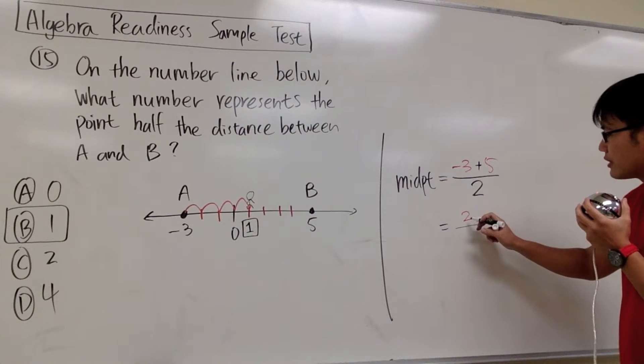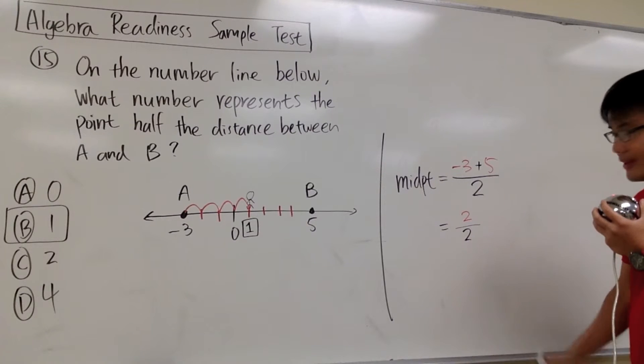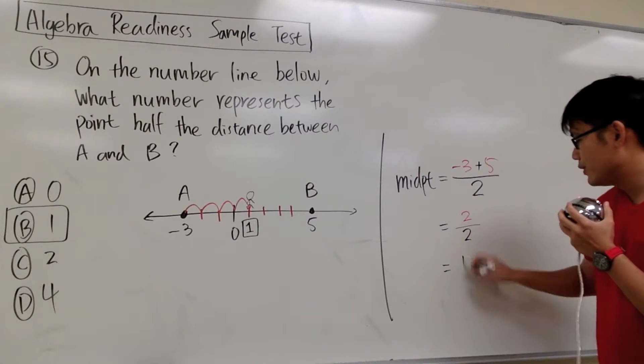And then we have positive 2 on the top. We still have to divide the 2 by 2. What's 2 divided by 2? We get 1.